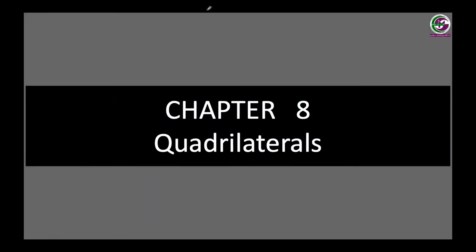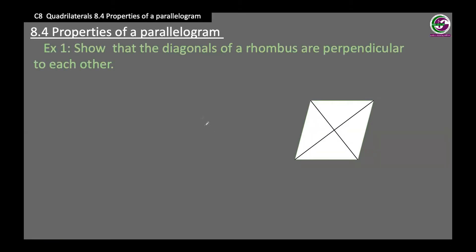Hello everybody, we are with the family of quadrilaterals. In the previous period we saw details about one of the members, and today we will see a few more examples related to parallelogram. First question: show that the diagonals of a rhombus are perpendicular to each other.